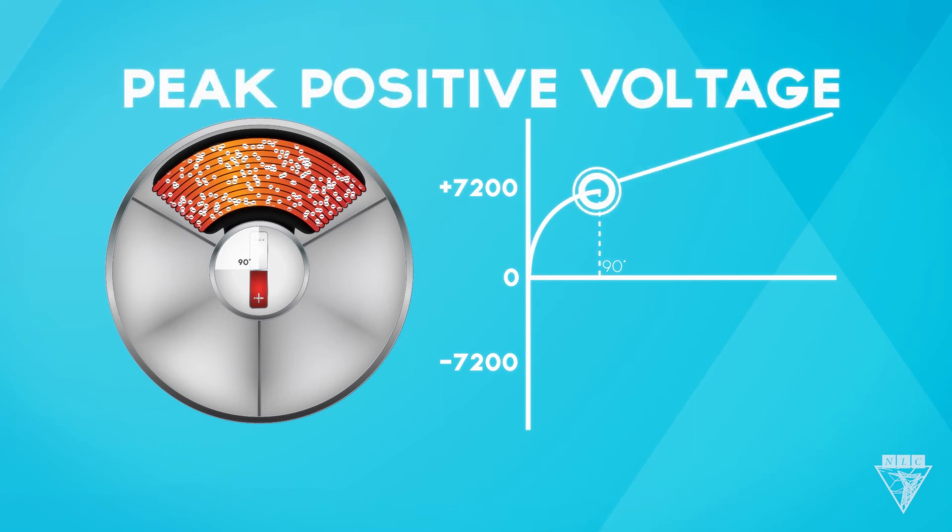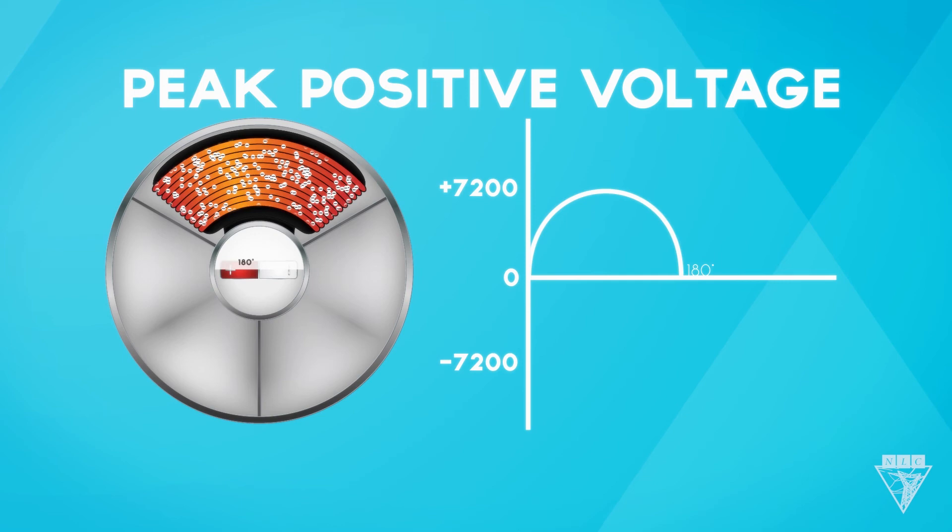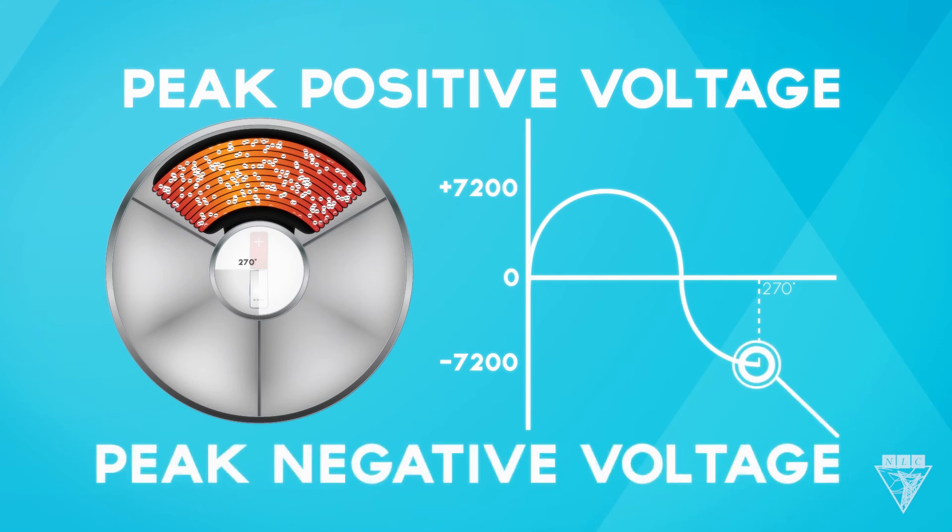When the coil rotates to 180 degrees, it's halfway between the positive and negative poles again. So we're back to zero volts. But once it reaches 270 degrees, it's closest to the positive pole. And the electrons rush back towards the magnet at a maximum rate. This makes a peak negative voltage.